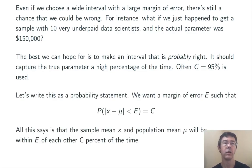Let's write this all a little more formally as a probability statement. We want to find a margin of error E such that the probability that X bar and mu are within E of each other is C. Written in symbols, P of the absolute value X bar minus mu is less than E equals C.